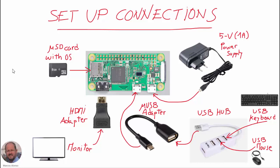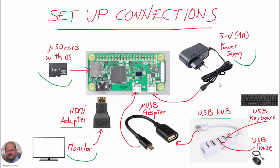Now that we have our micro SD card with the operating system, we introduce the card into the corresponding slot in the Raspberry Pi board and do the rest of the connections. We connect a monitor to the HDMI connector - we may need an adapter to connect the cable to the monitor. Then we connect the micro USB adapter if necessary, and we can also use a USB hub to have more USB ports available, so we can connect our keyboard and USB mouse. Finally we plug in the power supply. We require a 5 volt power supply; the maximum current is around 1 ampere, so we can usually use any smartphone battery charger.